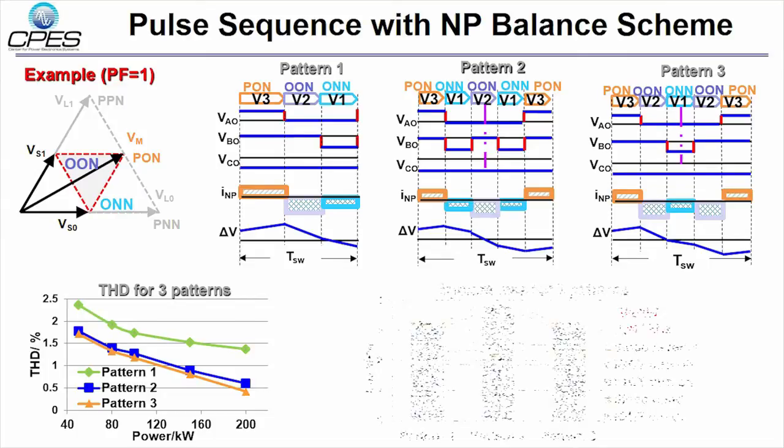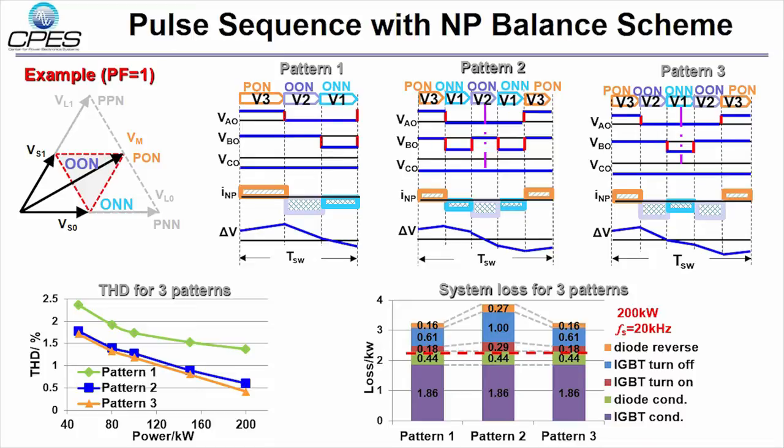Also, a total system loss breakdown gives loss comparison for the 3 patterns. From the above result, it is shown that pattern 3 is the most desired switching pattern in one switching cycle.